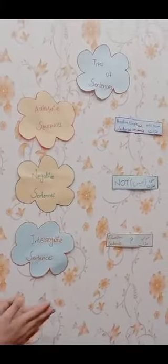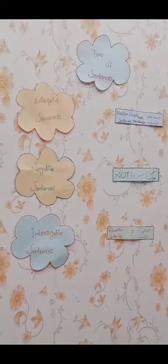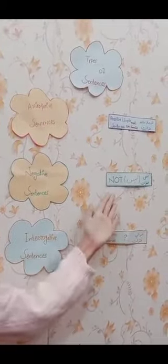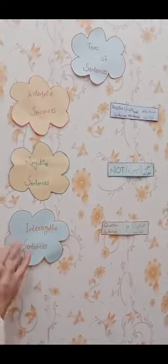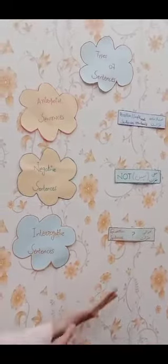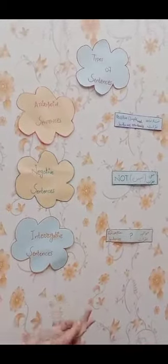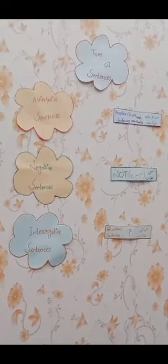In affirmative sentences, there is no use of 'not' and no use of the do/does family. In negative sentences, there must be a use of 'not'. In interrogative sentences, there is a use of the WH family or a question mark.